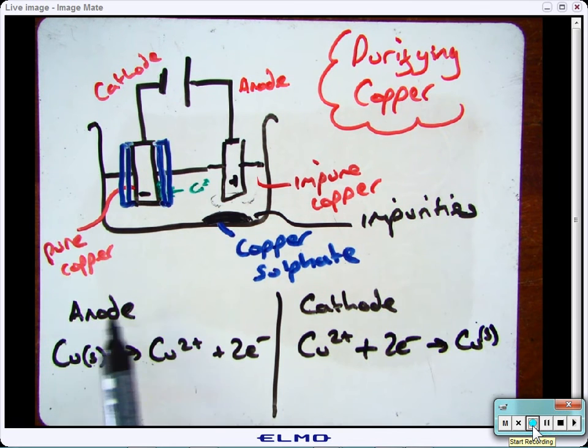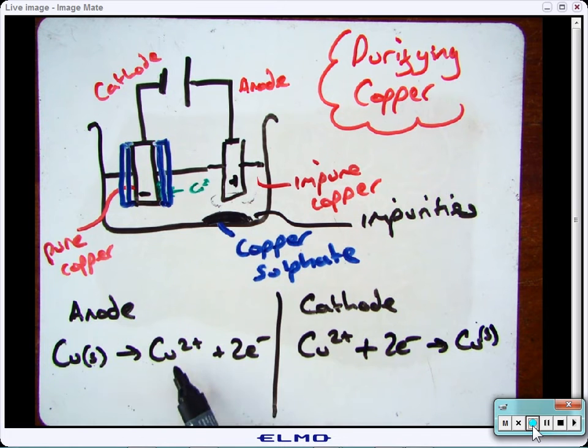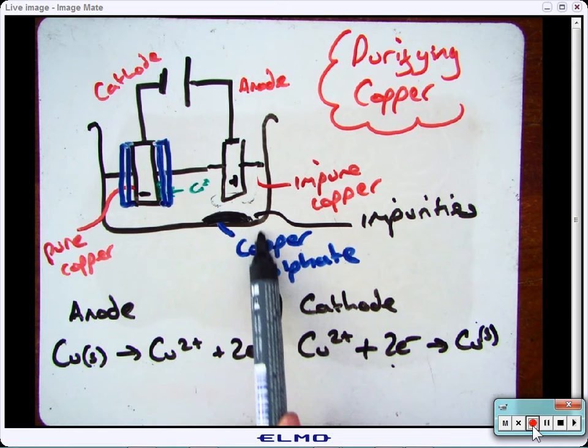And these are your half equations. At the anode, the solid copper on the impure electrode turns into Cu2+ by losing two electrons, migrates over to the negative cathode where it will then gain those electrons back and be purified, removing any of the impurities which drop down to the bottom.